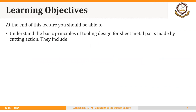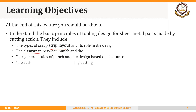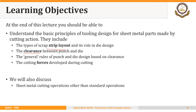At the end of this lecture you should be able to understand the basic principles of tooling design for sheet metal parts made by cutting action. They include the types of scrap strip layout and its role in die design, the clearance between punch and die, and the general rules of punch and die design based on clearance, and the cutting forces required to perform a certain cutting operation. We will also discuss sheet metal cutting operations other than standard operations and the types of dies used in sheet metal cutting operations.